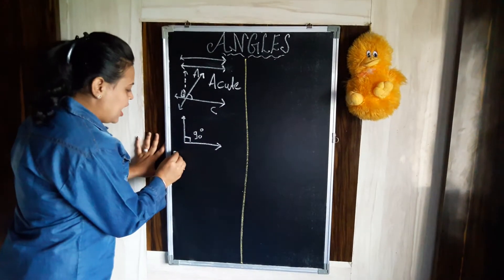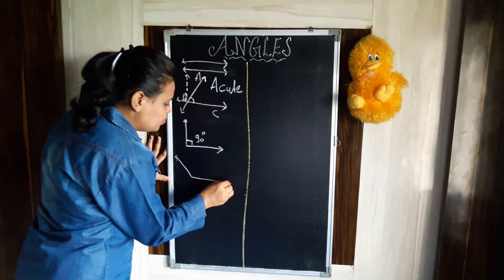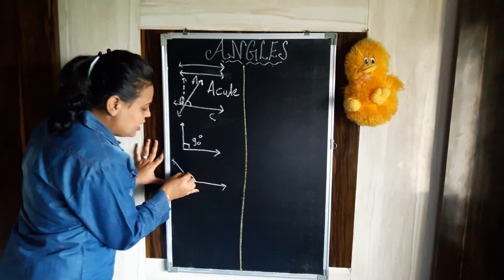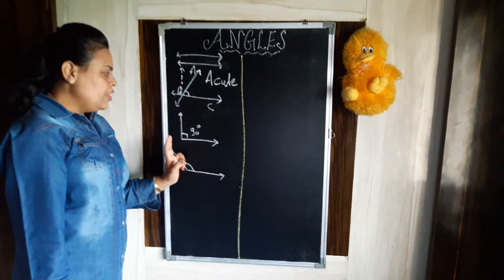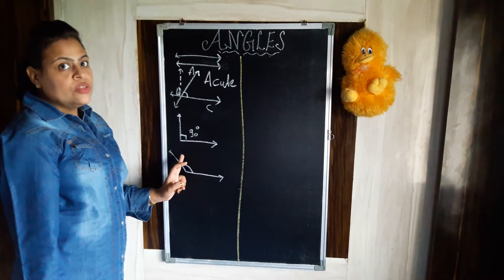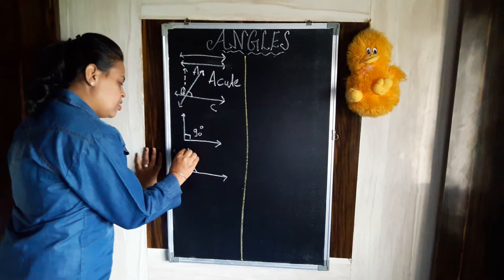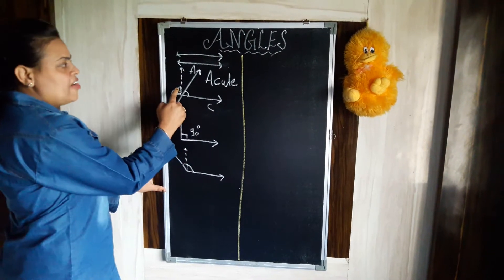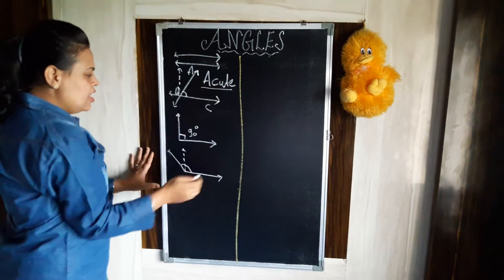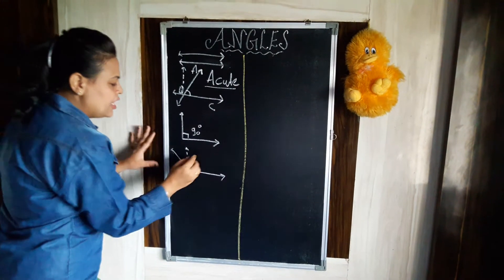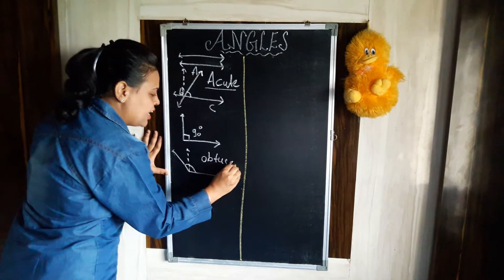Then we have another type of angle — that is an obtuse angle. When an angle is more than 90 degrees, we call it an obtuse angle. So: less than 90 degrees is an acute angle, and more than 90 degrees is an obtuse angle.